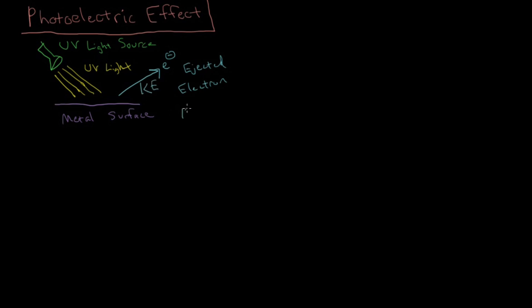And that electron gets ejected with some characteristic kinetic energy. So kinetic energy equaling, as we know, one-half mv squared. One-half mass times velocity squared. So as the velocity goes up, the kinetic energy is going up.